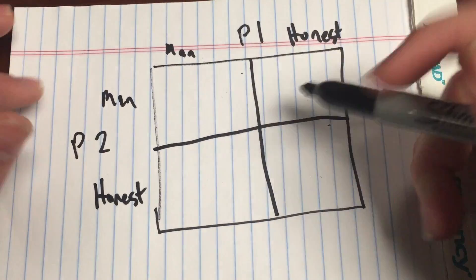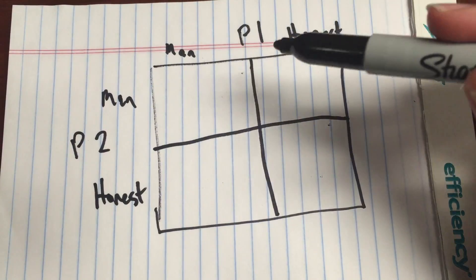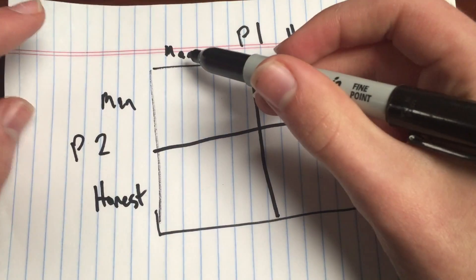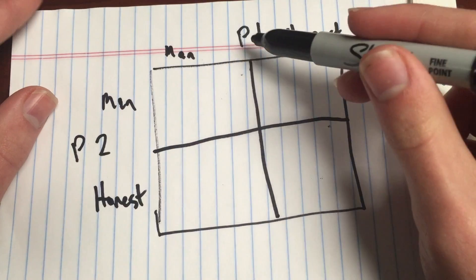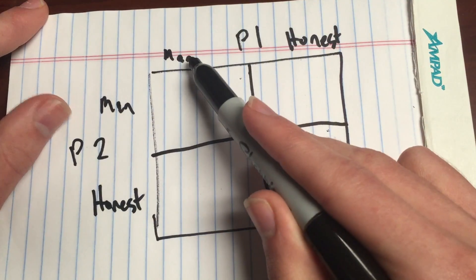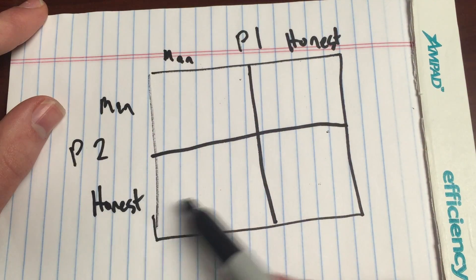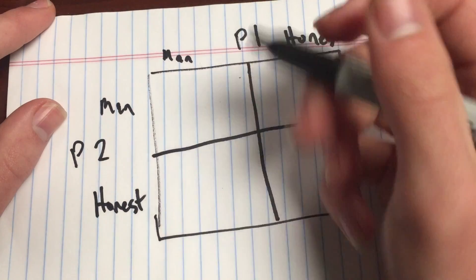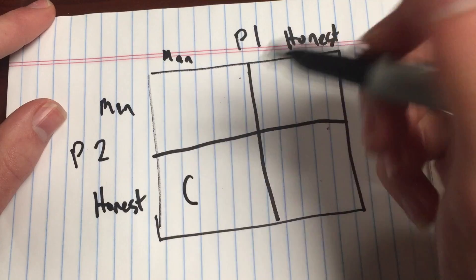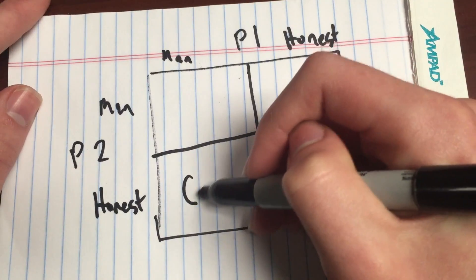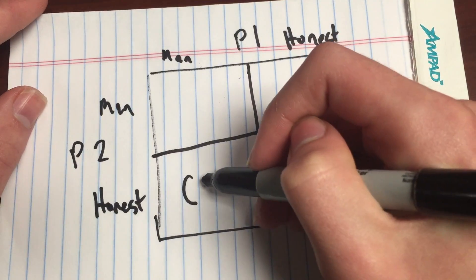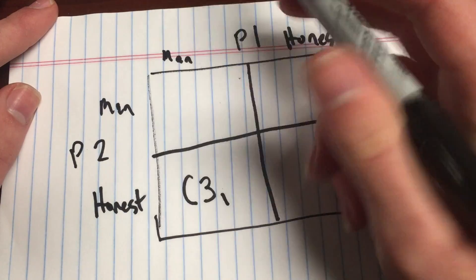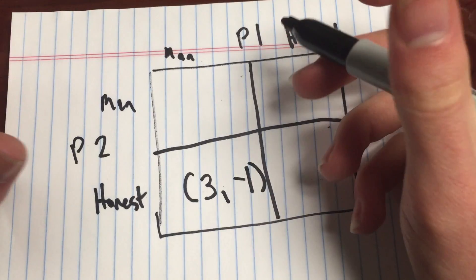Now the benefits derived to these players will be represented using numbers. So player one, if he decides to be manipulative, obviously what's going to help him the most is if player two is honest, because then that just gives player one more leverage against him. So player one would benefit in this interaction, where player two is honest, we're going to write that as three. But player two would lose out in this interaction, so I'm going to write that as a negative one.